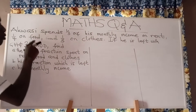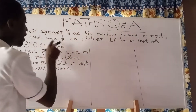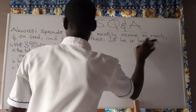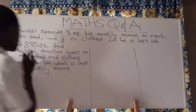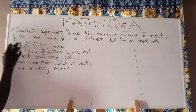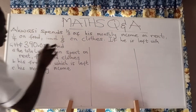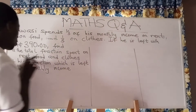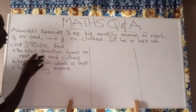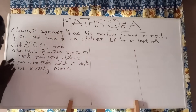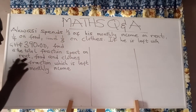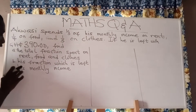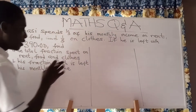one fourth on food, and one fifth on clothes. If he is left with 390 Ghana cedis, find: A) the total fraction spent on rent, food, and clothes; B) the fraction which is left; and C) his monthly income.